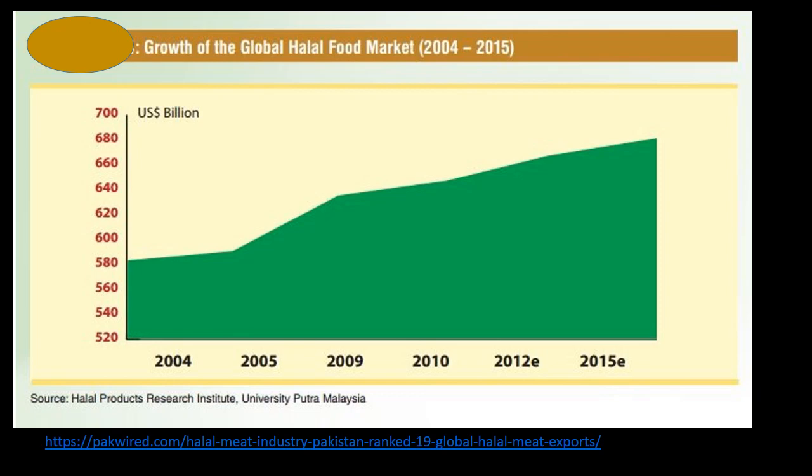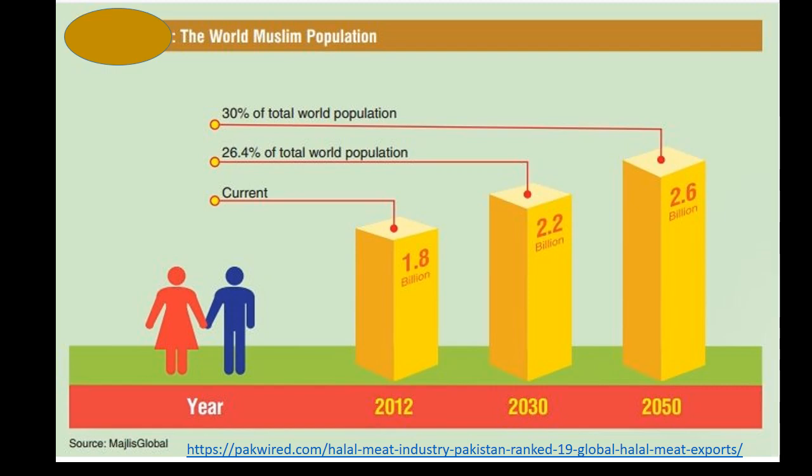According to the Karachi Chamber of Commerce and Industry, the halal meat industry is growing at a rate of 27% annually. This industry expanded from $14 million in 2013 to $244 million in 2015. The statistics about the world Muslim population are also very encouraging: in 2012, Muslims were 1.8 billion, and by 2050 the Muslim population will be 30% of the total world population.